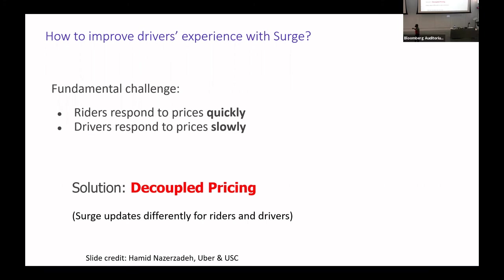The fundamental challenge is that riders respond to prices quickly — I open the app, see a price, and request or don't — but drivers have a natural delay because of spatial frictions. If it physically takes 10 minutes to drive somewhere, there's nothing you can do about that. So what I worked on at Uber was switching to what's called decoupled pricing: the rider-facing price and the driver-facing payment update at different time scales. The public claim is that on average riders and drivers still each get their fixed percentage of the total pot, but it may not be true at the individual trip level anymore.